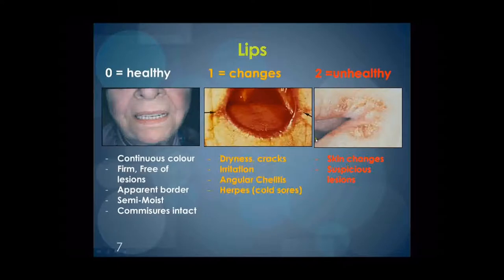Now we'll go through category by category. Lips. Healthy lips should be continuous in color, firm in texture, free of lesions, semi-moist, with an apparent border between the lips and the skin of the face. Commissures, or corners of the mouth, should be continuous and intact.